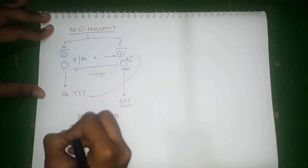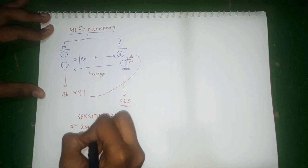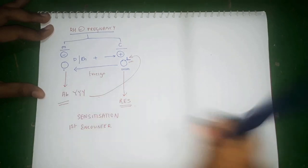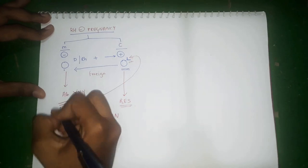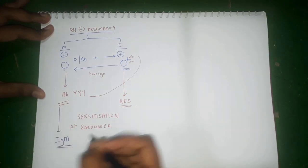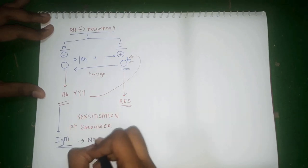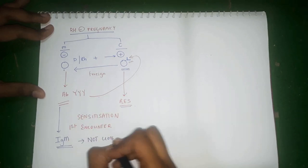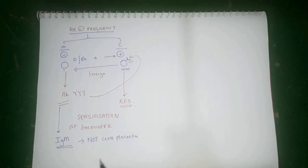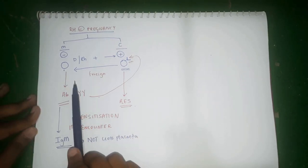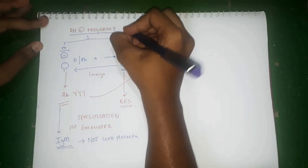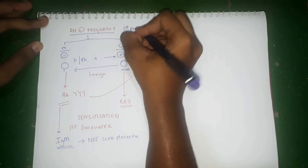Remember, this is the first encounter, so the type of antibodies produced will be IgM type. The speciality of IgM is that it will not cross the placental barrier. So the killing of fetal RBCs is restricted to those which have entered the circulation. This IgM will not cross the placenta — this is what happens in the first pregnancy or the first encounter.